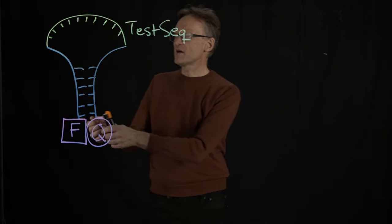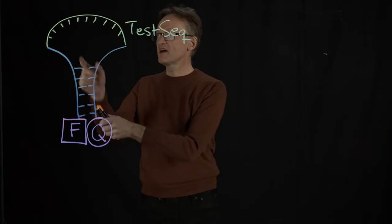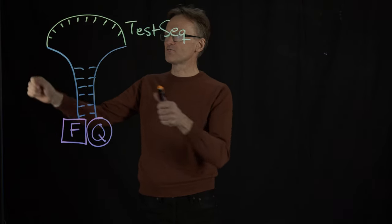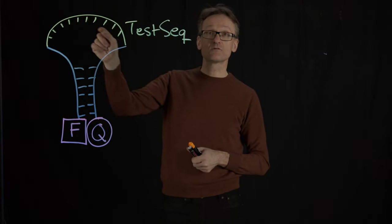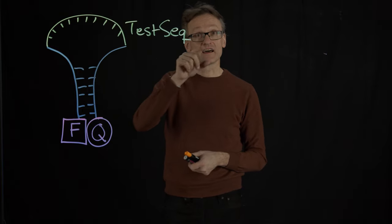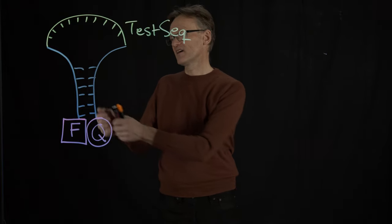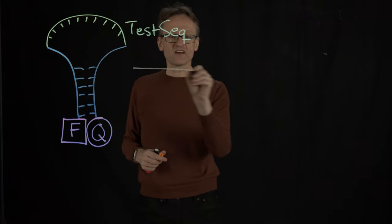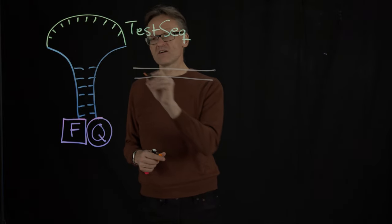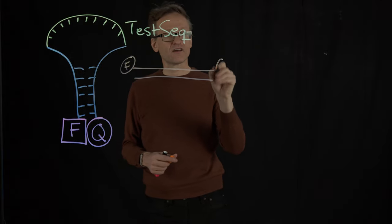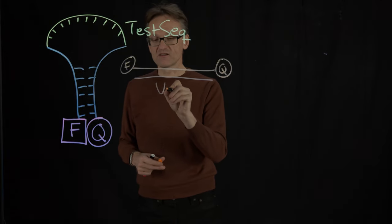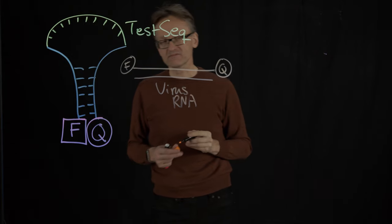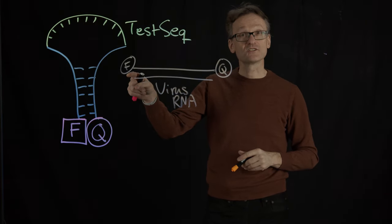So the idea here is that depending on the sequence we have up here, if this one occasionally unfolds, if the particular test sequence binds to something like the viral RNA, then this one will instead of being in this shape end up in this shape. And now we have the fluorophore there and the quencher there and maybe virus RNA here. And here we're now going to see fluorescence.